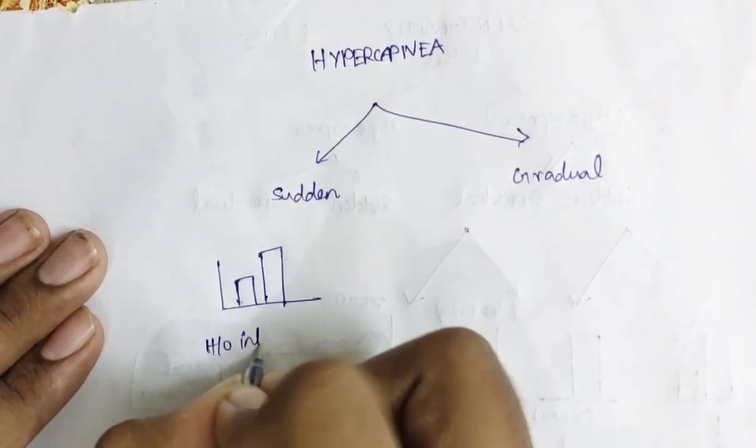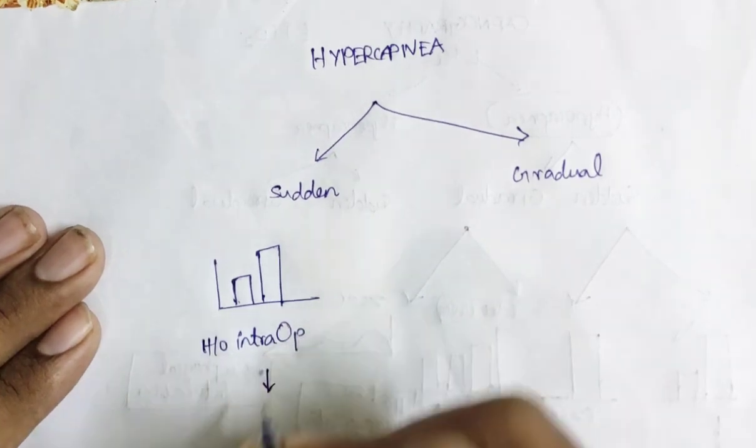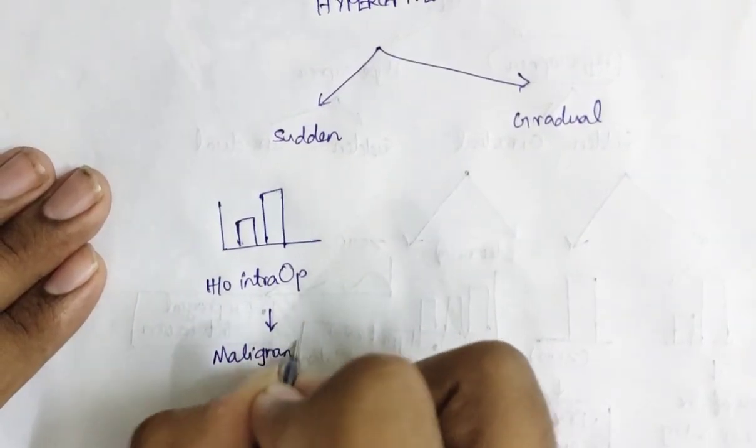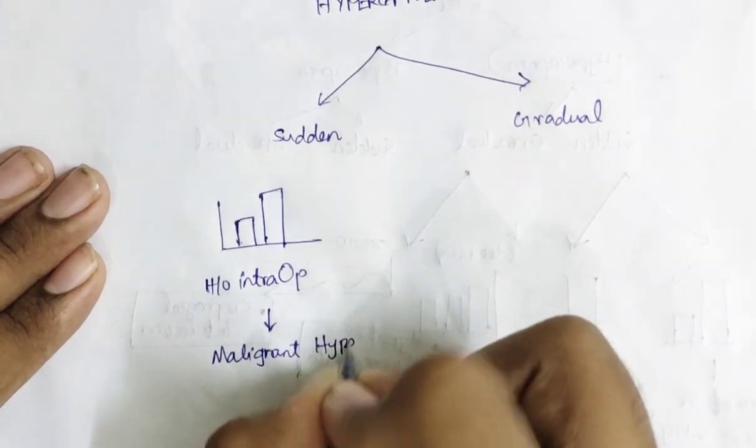What if there is a sudden hypercapnia in the EtCO2 machine? If there is a history of intraop finding like this, I hope you got the answer: malignant hyperthermia.